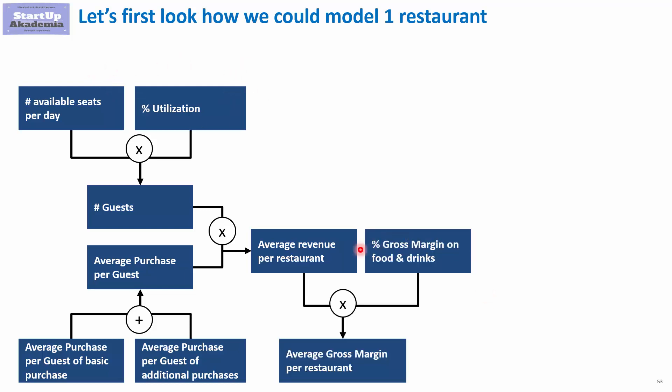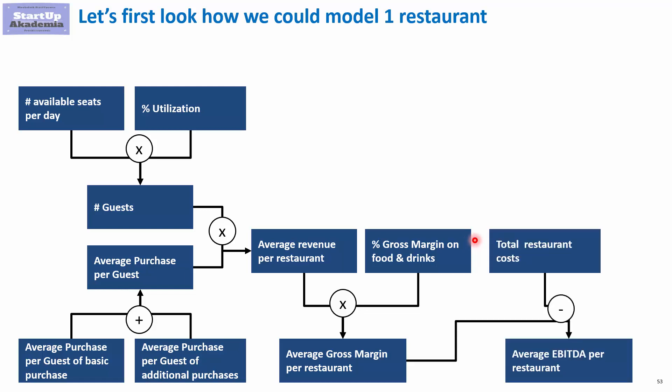Next we go to the average gross margin per restaurant. Here we look at the percentage gross margin on food and drinks. When we deduct the costs, we get the average EBIT per one restaurant.